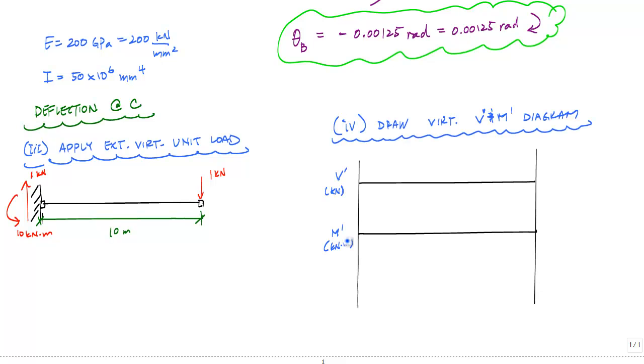And now I can go ahead and draw the virtual shear and moment diagram. So shear diagram is just a constant shear of 1 kilonewton all the way across. And then my moment diagram, because my shear diagram is constant, my moment diagram is linear, starting at negative 10 kilonewton meters.